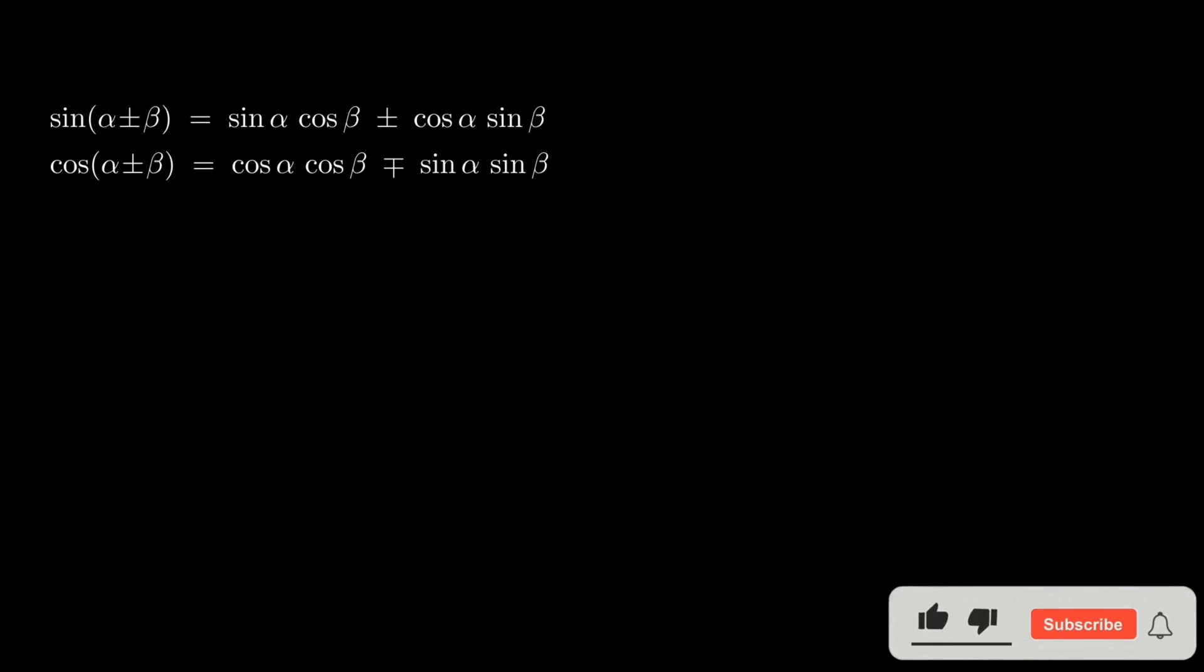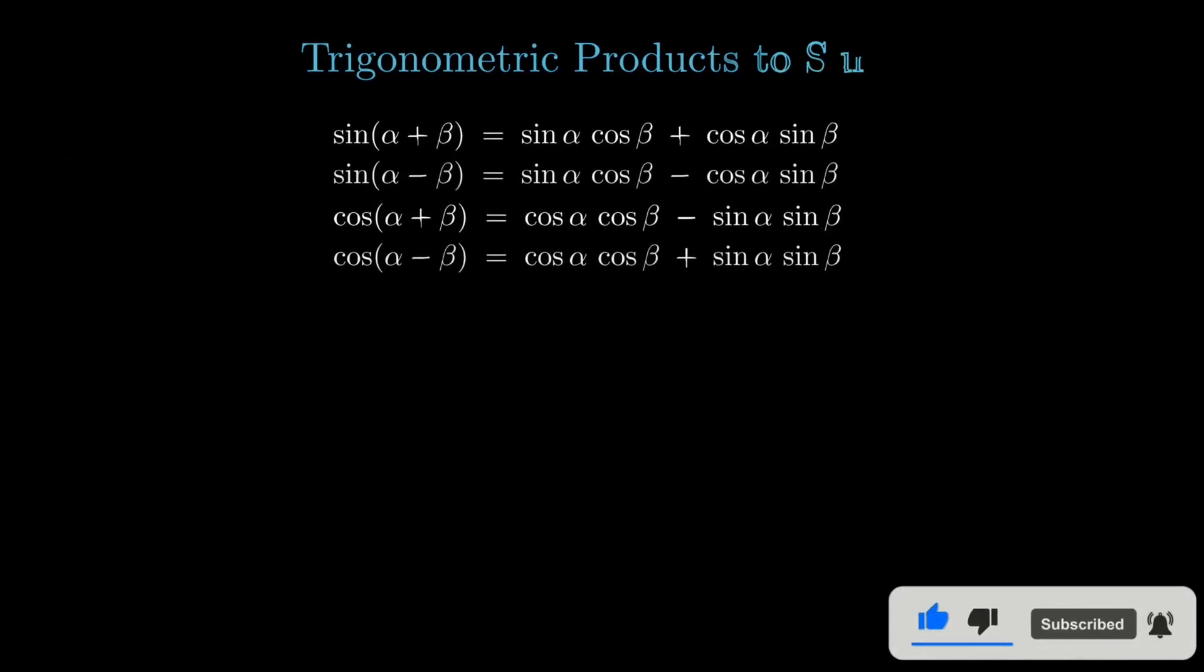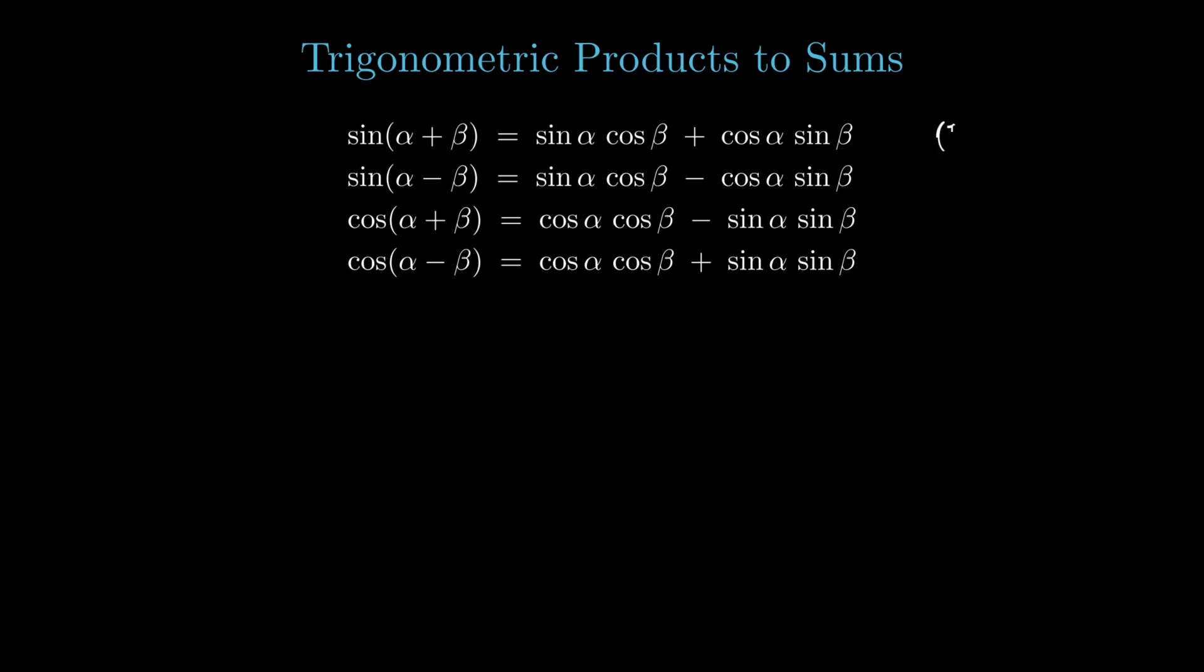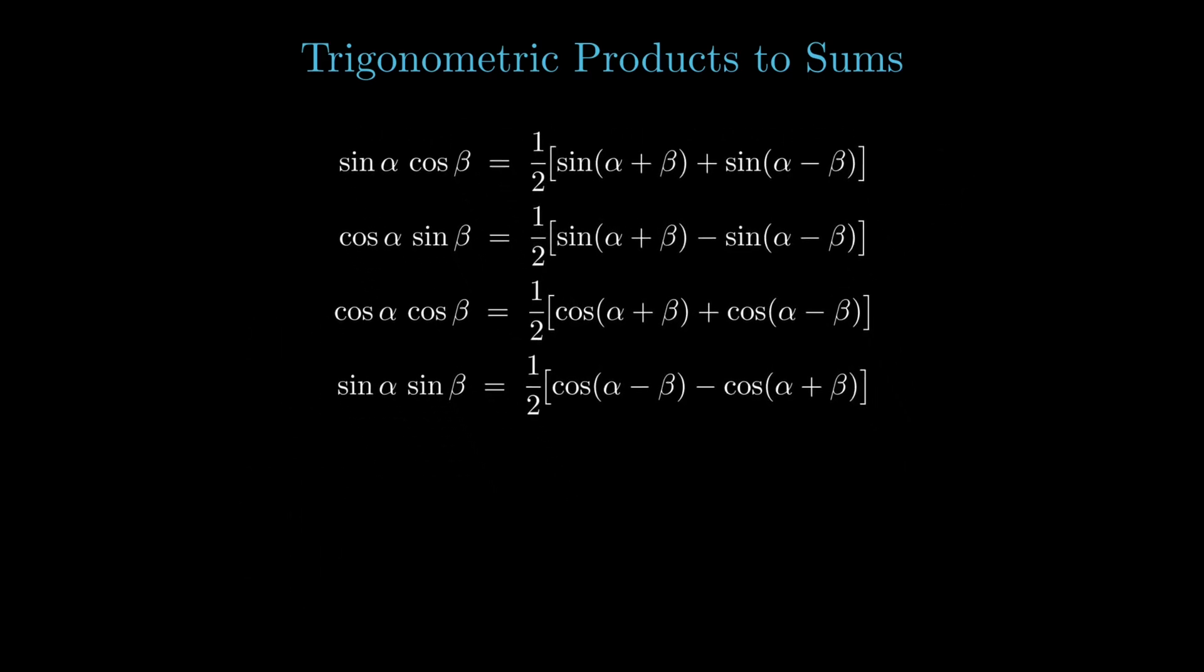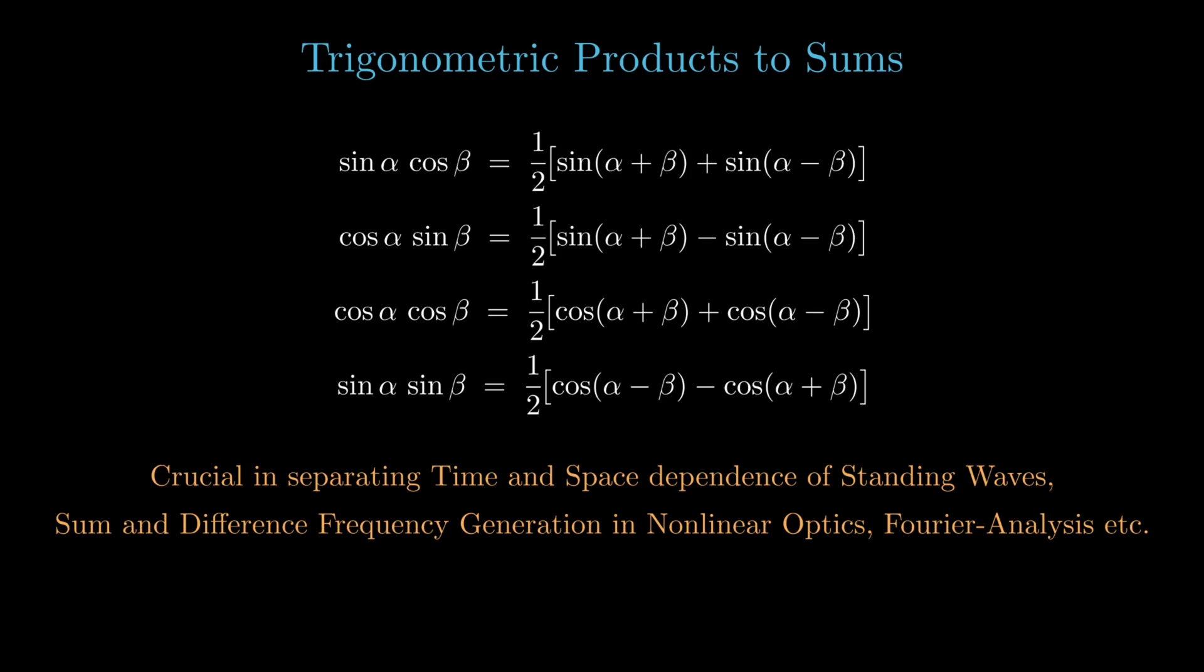Right, so next, once again let's look at the sum and difference identities. Let's split them up from their compact form so you have 4 equations to work with. We are going to use them to convert trigonometric products to sums. We label each of the equations and now we club pairs of them together and either add or subtract and then divide by 2. For instance, if we add equations 1 and 2 and average them out, we eliminate the cos α sin β term and can express sin α cos β in terms of sin(α+β) and sin(α-β). In a similar fashion, you can chalk out 3 more equations. These product to sum relations are what let you separate time and space parts of standing waves, analyze sum and difference frequencies in non-linear optics, break signals apart in Fourier analysis and so on.